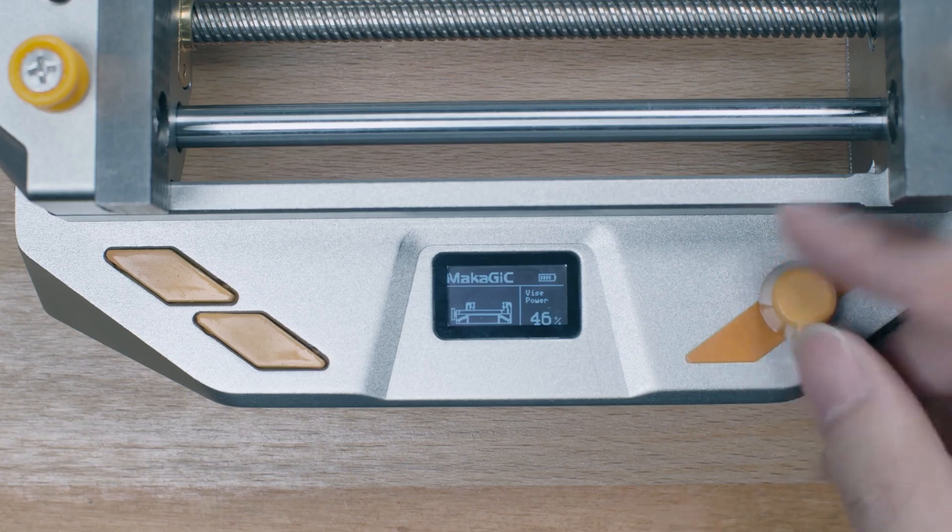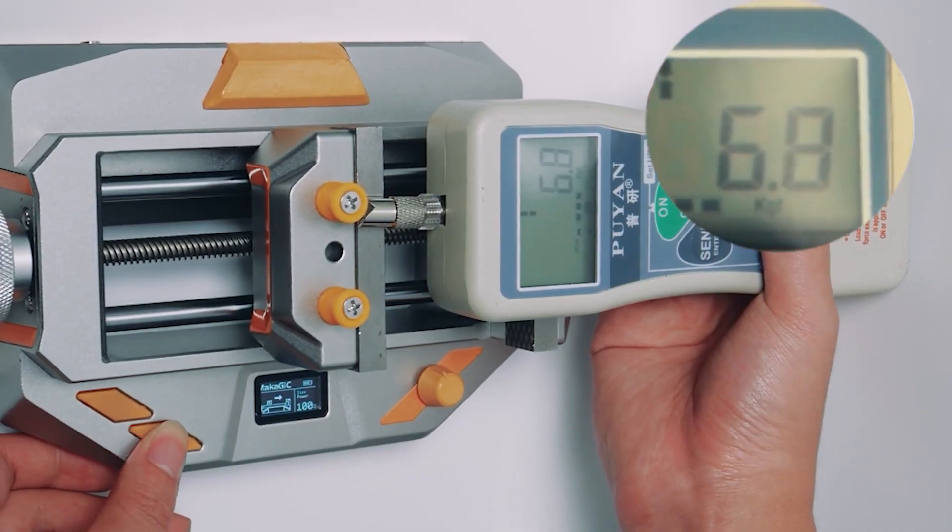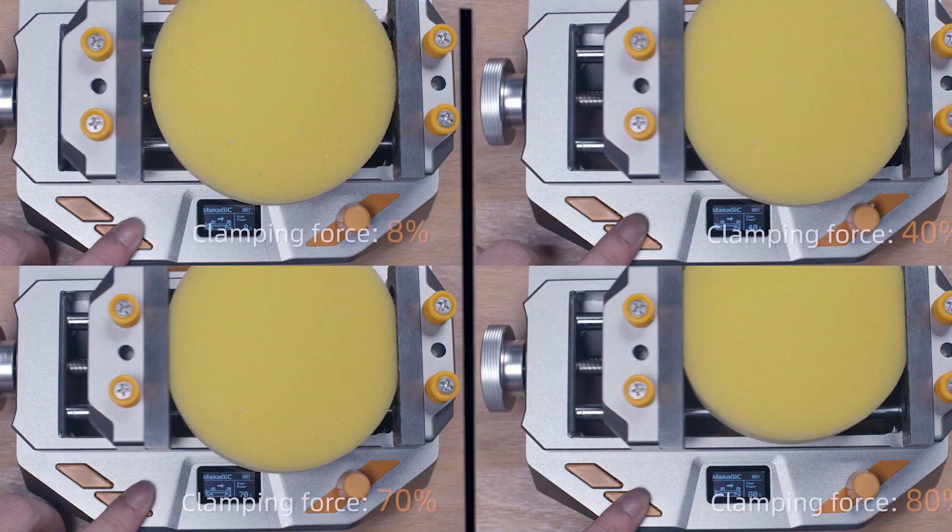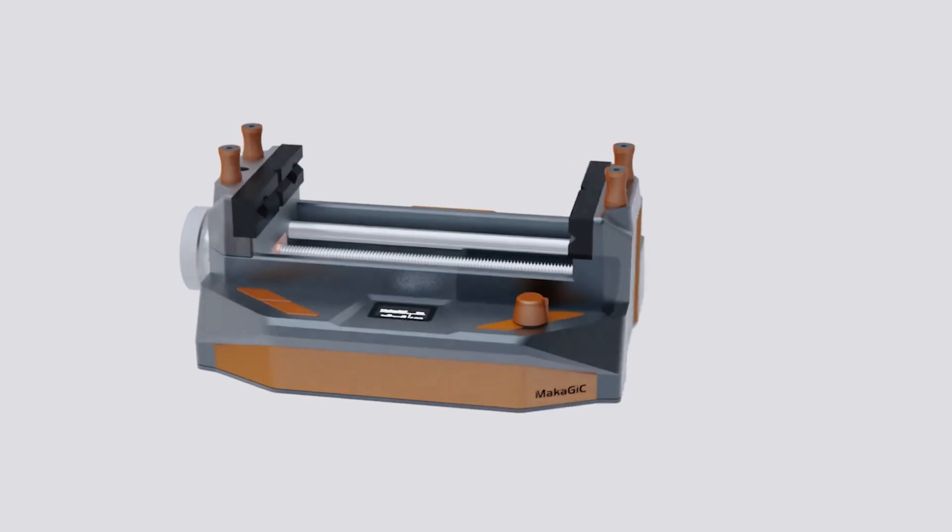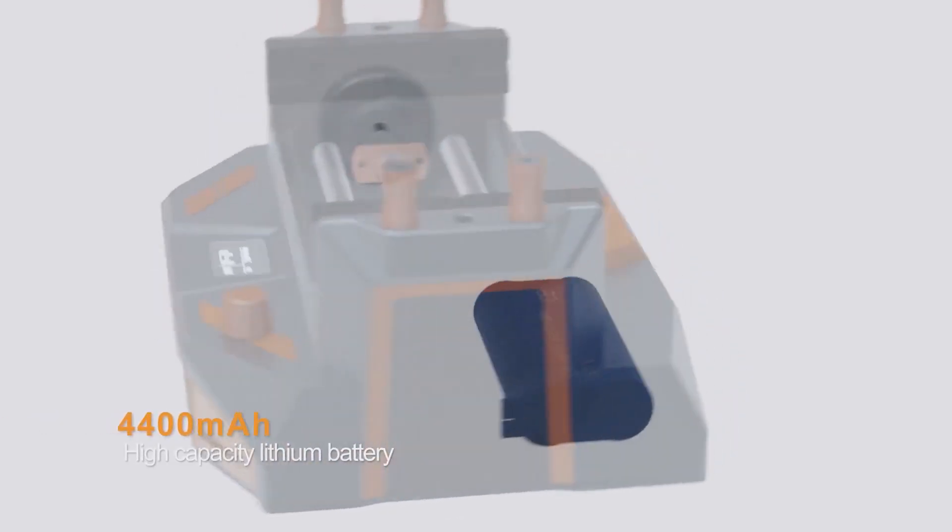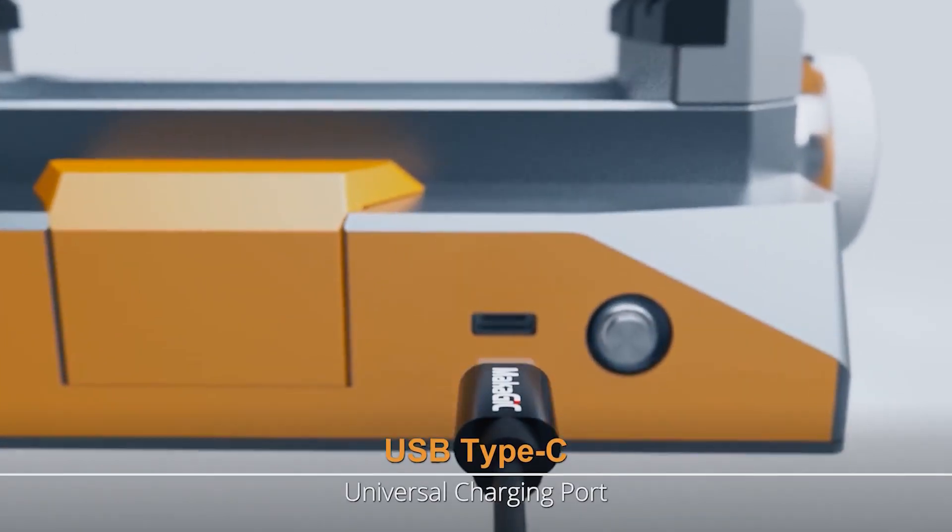McAgic has up to 100 adjustable gears and a wide clamping force range up to 7 kgf, so you don't have to worry about damaging the clamped object. In addition, McAgic is equipped with a 4,400 mAh battery and supports Type-C charging.